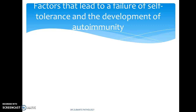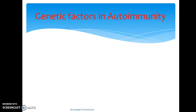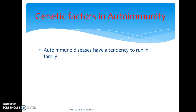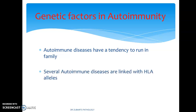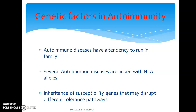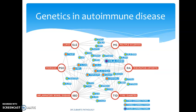What are the factors that lead to a failure of self-tolerance and the development of autoimmunity? Failure of self-tolerance leads to autoimmunity. The first factor is genetic factors and the second is infections. Autoimmune diseases are known to run in families, and several autoimmune diseases are linked with HLA alleles. Inheritance of susceptibility genes may disrupt the different tolerance pathways. We can see how genes are associated with different autoimmune diseases.